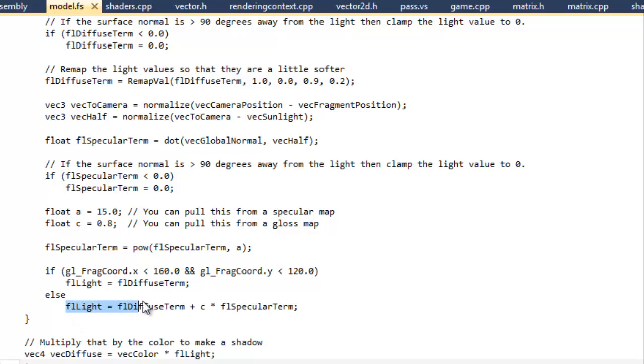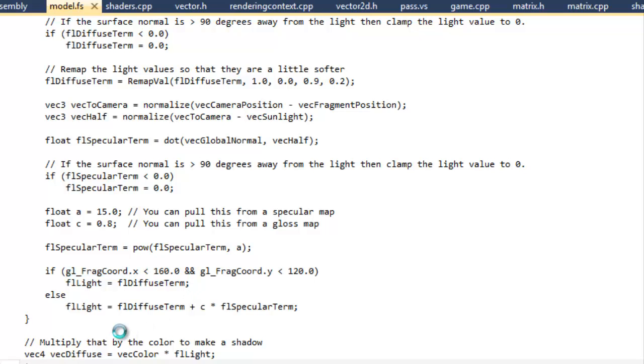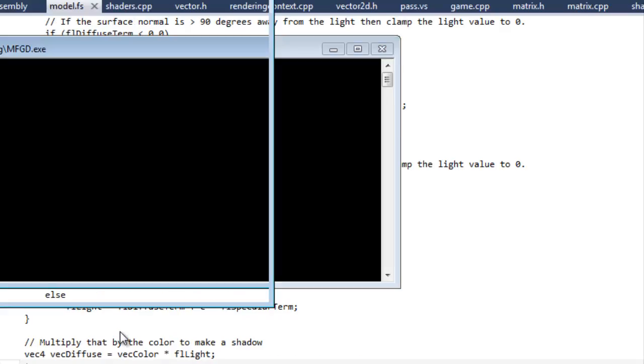And then lastly, we added in, here's our entire light equation, the diffuse term plus C times the specular term. And all this frag coord stuff is, is that I cordoned off a small box so that you can see the difference. And let's just hop into it and see what that looks like.